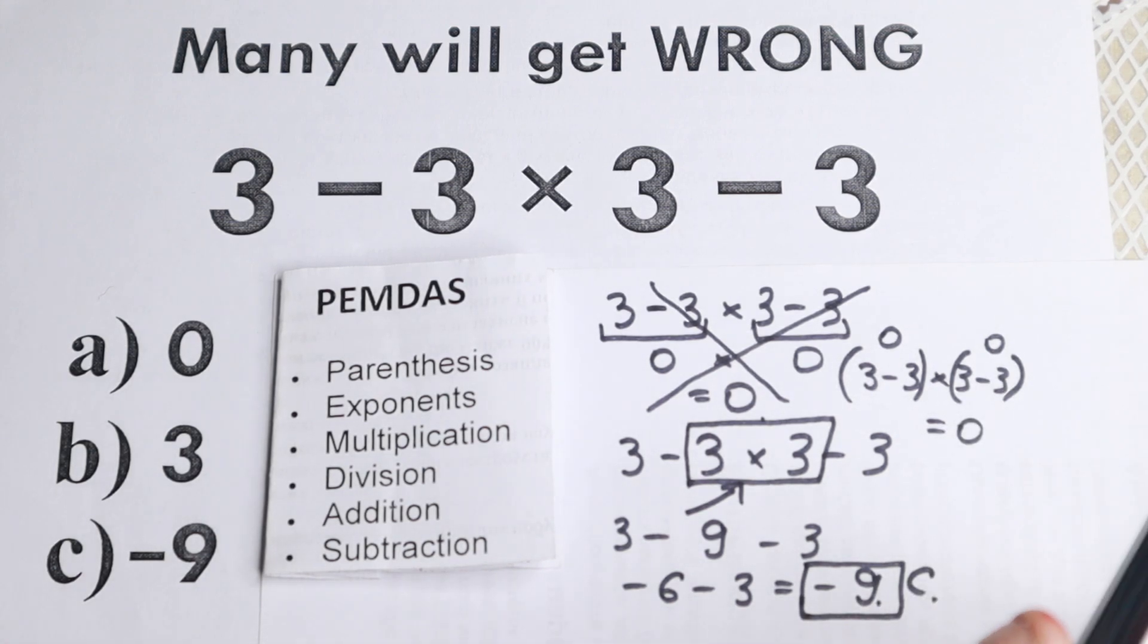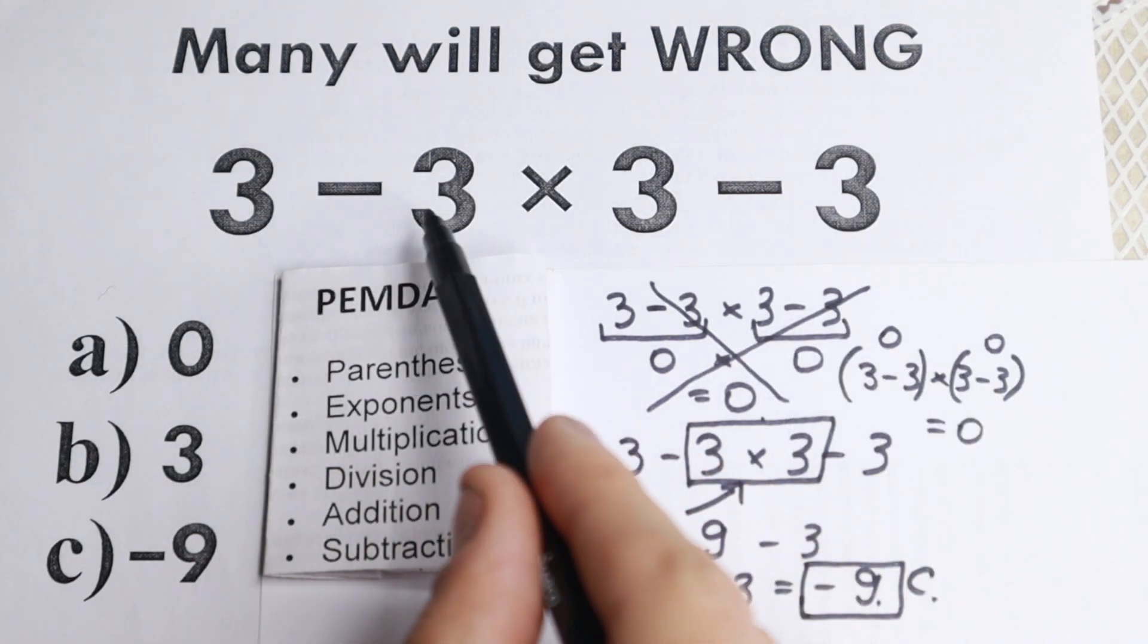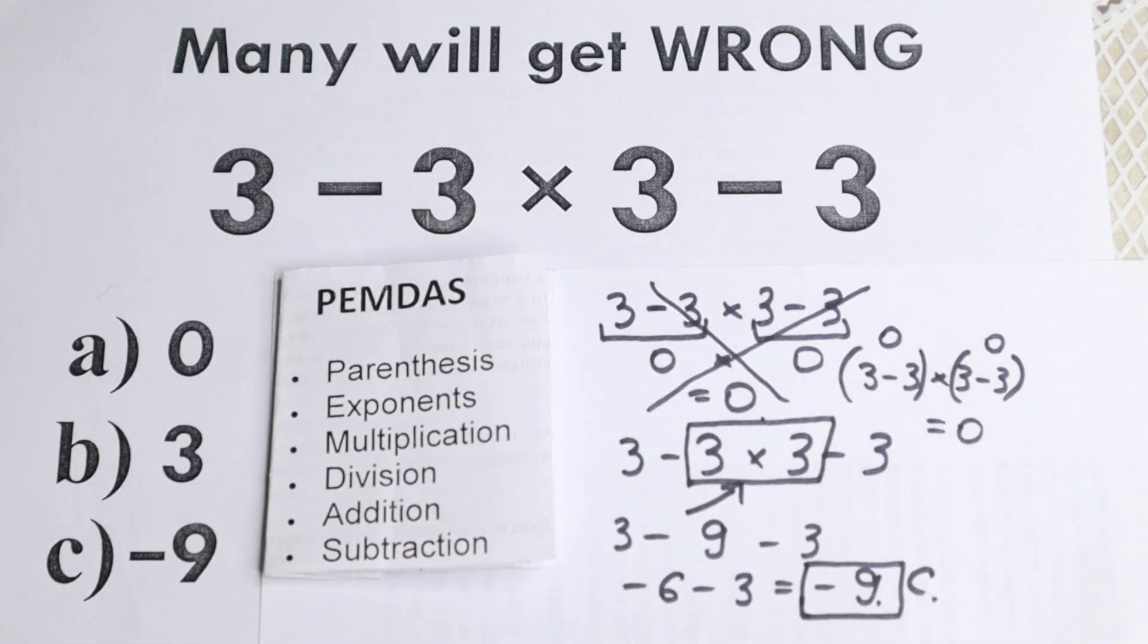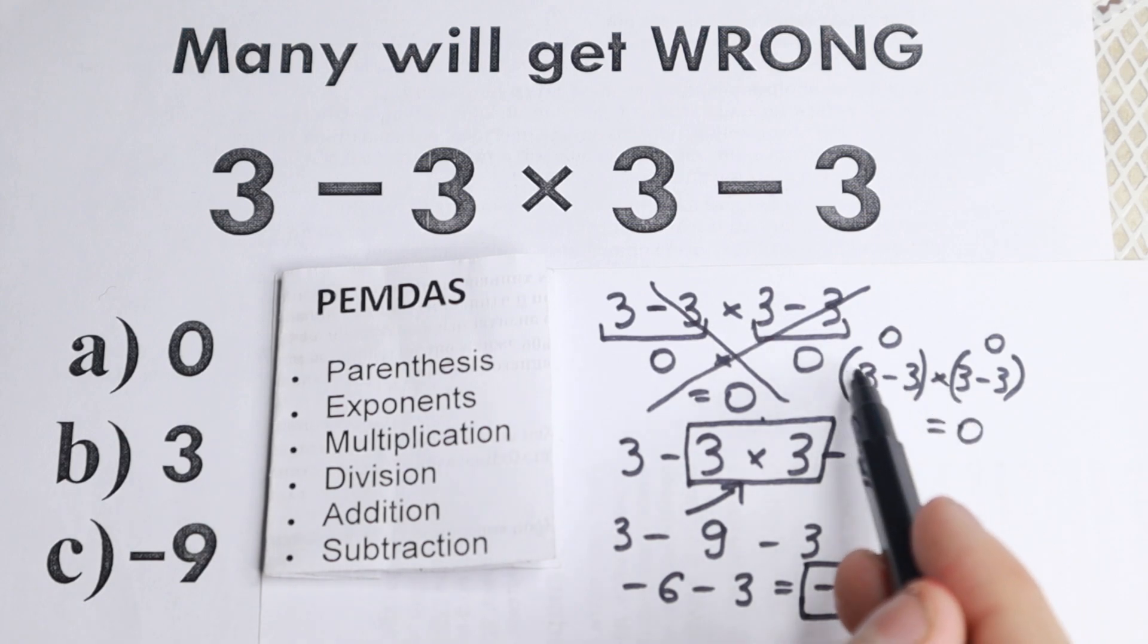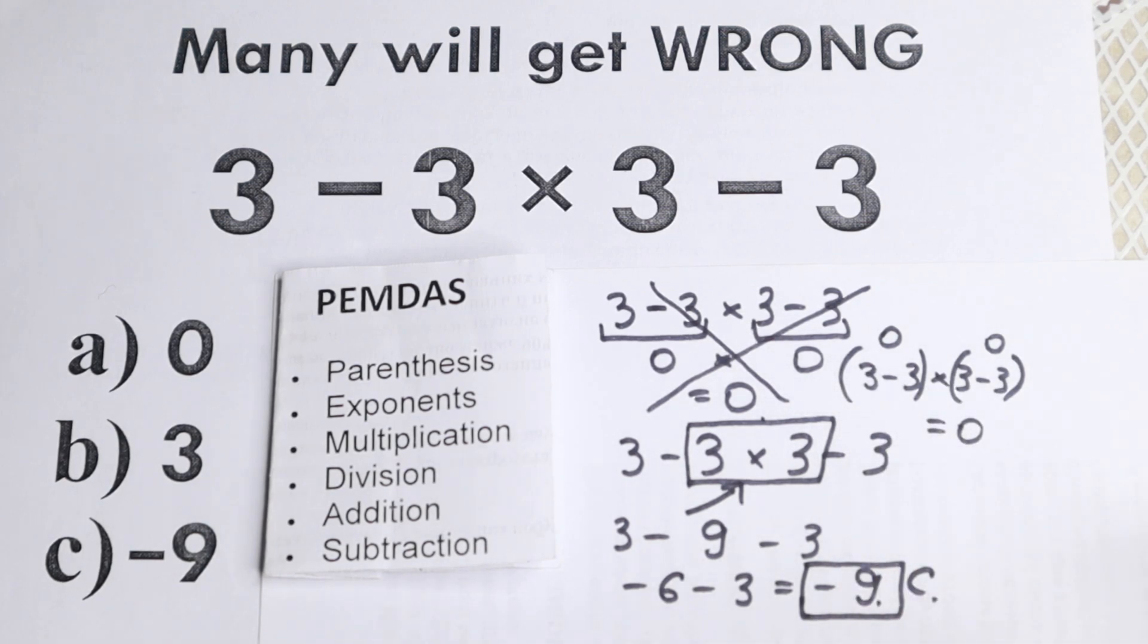Really tricky problem. A lot of students, this is a common mistake. They like to subtract first and then multiply. But this is absolutely incorrect approach. If you want to get zero, you need to put brackets and parentheses right here.